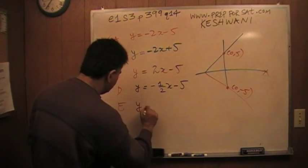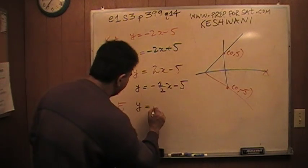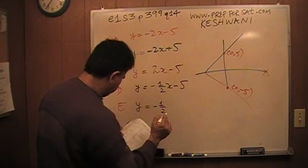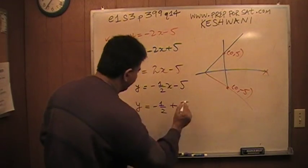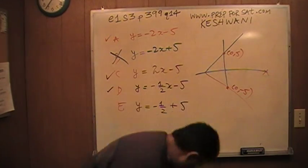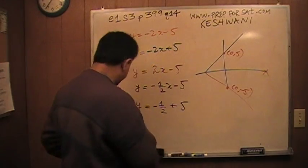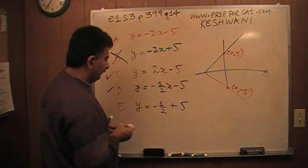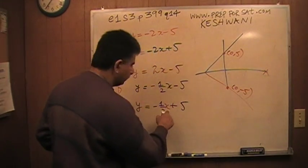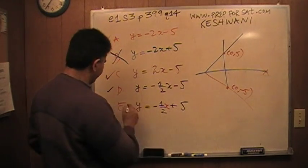And E says y equals negative one-half x plus 5. When x is zero, y is going to be positive 5. This guy is no good.